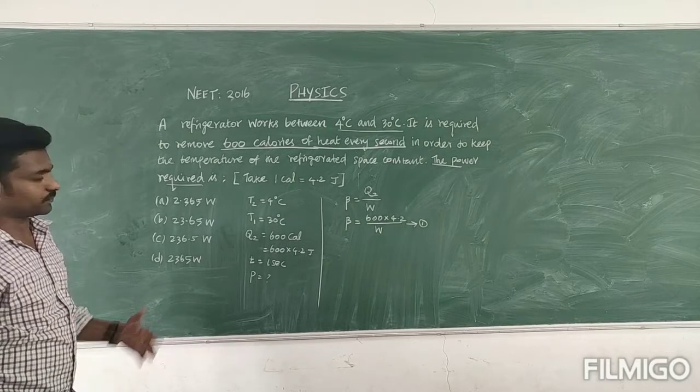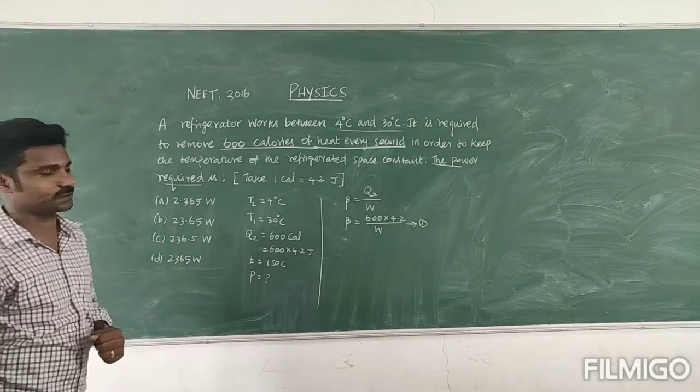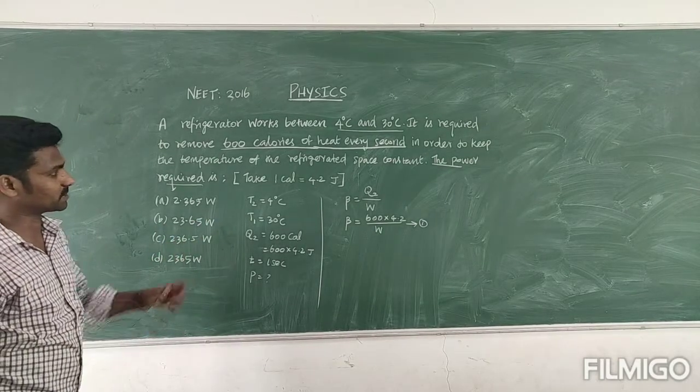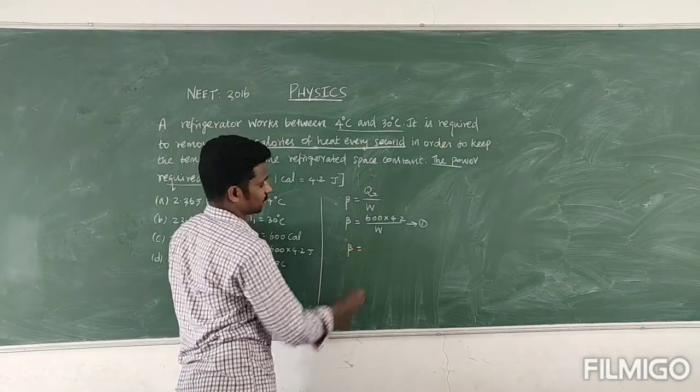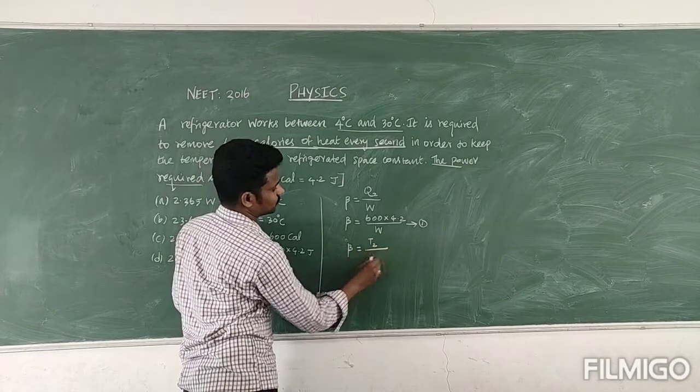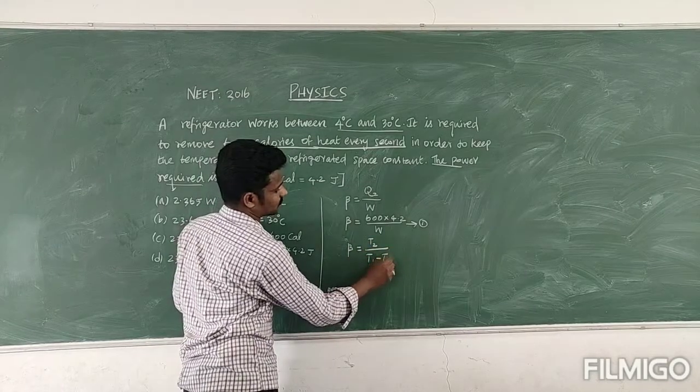Then one more formula for efficiency of the refrigerator. So that is beta is equal to, in terms of temperature, that is T2 divided by T1 minus T2.